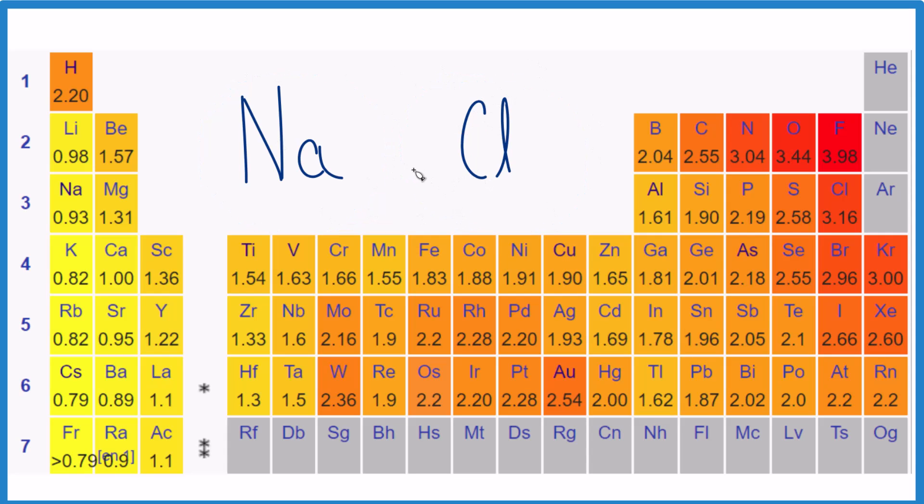If we look on the periodic table, an easy way to do this is to look at fluorine right here. Fluorine has the highest electronegativity of all the elements.